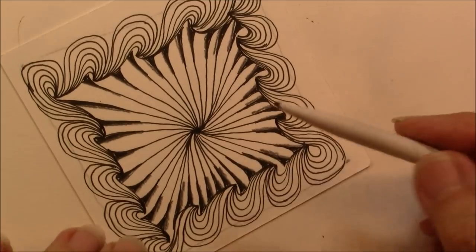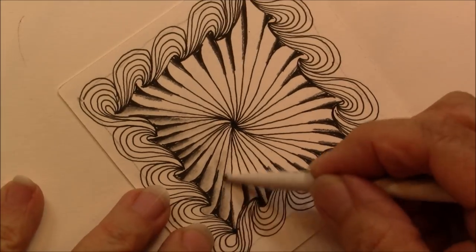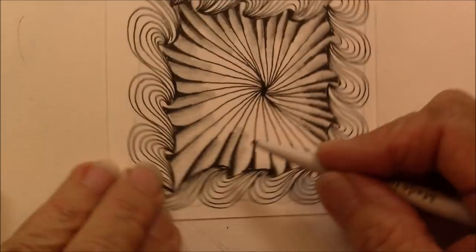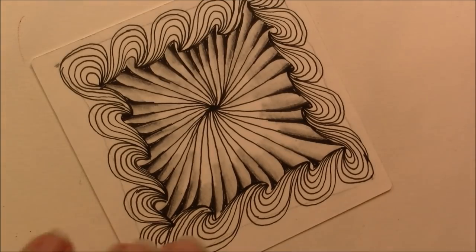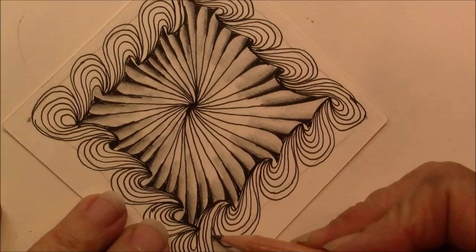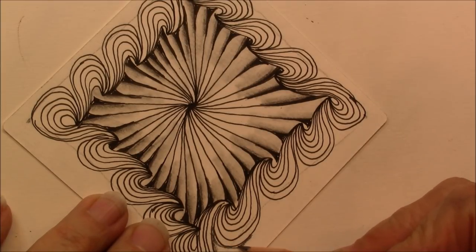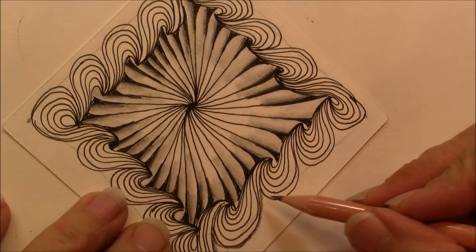Now I'm going to get my shading stump and shade that. And you can also take your graphite and come around the bottom of this Wigwag.